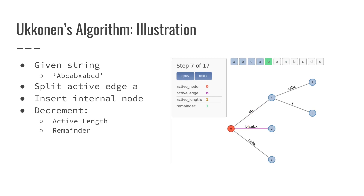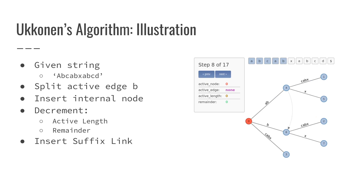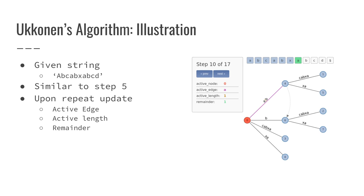We now resolve both A and B. We resolve A first with a split. In step seven, we split our active edge A and insert a new internal node, and also decrement the active length and remainder. Then for step eight, we will be splitting our active edge B. Since this is the second time we are splitting — greater than the first time — we will be using the suffix link, as indicated by that dotted line. Again we decrement active length and remainder, and since they have reached zero, we continue on with our algorithm.